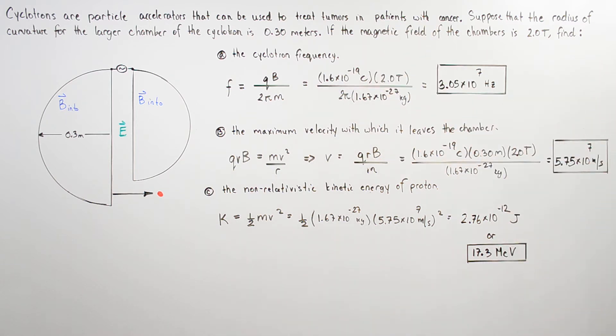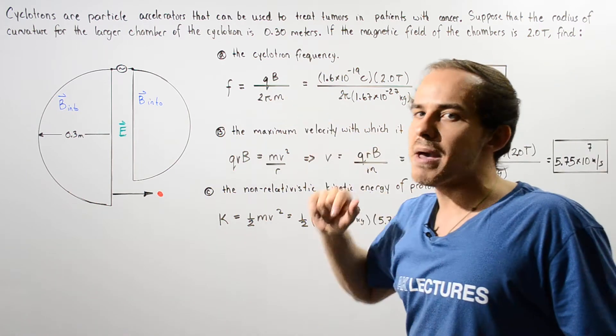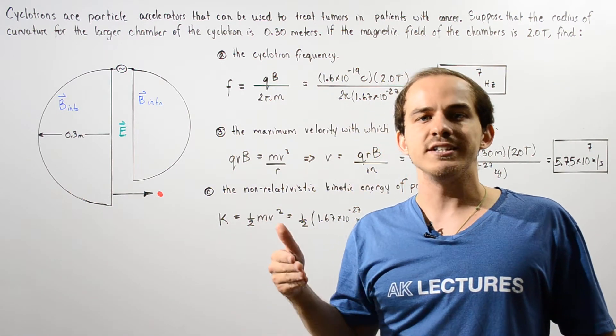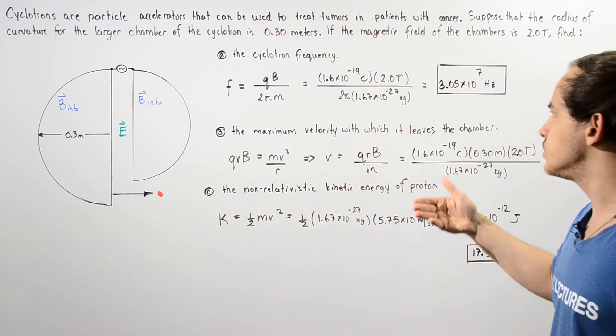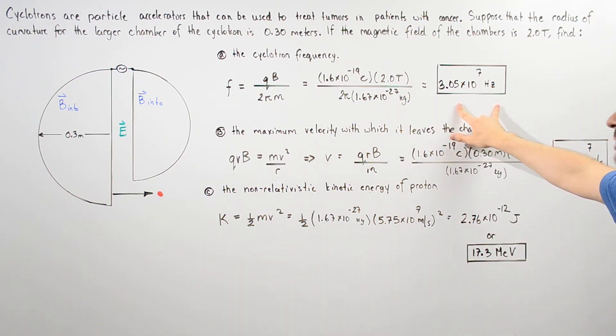The magnetic field B was given to be 2 Tesla, and the mass of our proton is 1.67 × 10⁻²² kilograms. We plug that in and we find that the frequency is 3.05 × 10⁷ hertz.